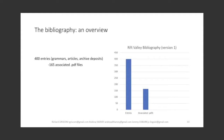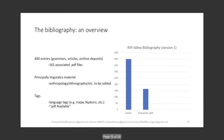Currently the bibliography contains around 400 entries in its first version, of these around 165 associated PDFs are available for members to download. Material is principally focused on the languages and linguistics of the Rift. Other works such as those with an ethnographic focus will probably be added in later versions. In the Zotero group, material has been tagged according to the language or languages it treats, as well as whether the associated PDF file is available for download. This tag convention can be further employed and refined in later releases.